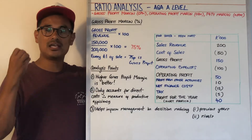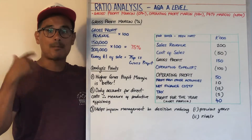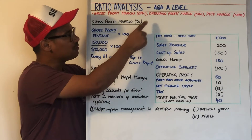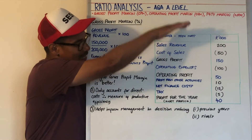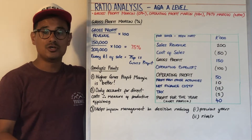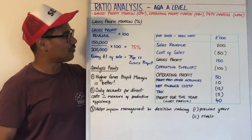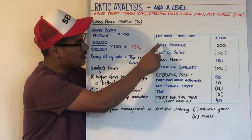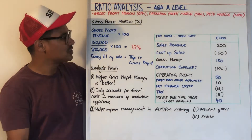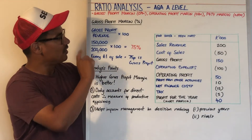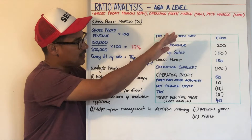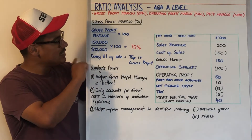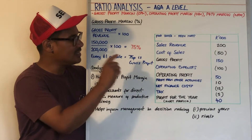The first one we're going to deal with is gross profit margin. Gross profit margin expresses a percentage. The formula is gross profit divided by revenue, times by 100. Using the income statement — the financial statement you'll need for these profitability ratios — gross profit is £150,000. Gross profit is simply sales revenue minus cost of sales. So £150,000 divided by revenue of £200,000, times by 100, comes to 75%, meaning for every £1 of sale, 75 pence is gross profit.